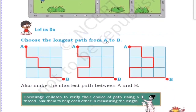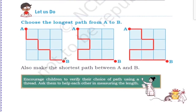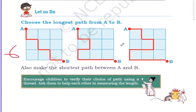Choose the longest path from A to B. Children, to go from A to B, which is the longest path? Look, here a square shape is given. Count the paths: 1, 2, 3, 4, 5, 6, 7, 8 - it came to 8. Another path came to 6. So the path of 8 is longer and 6 is shorter.